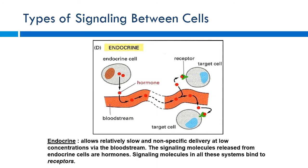Endocrine signaling is probably how most drugs act. Endocrine cells release hormones into the bloodstream, which travel and affect all sorts of cells. Most drugs work like this — given intravenously or orally, absorbed through the GI tract into the liver and then into systemic circulation. So a lot of drugs work similarly to this endocrine mechanism, which we're already familiar with.